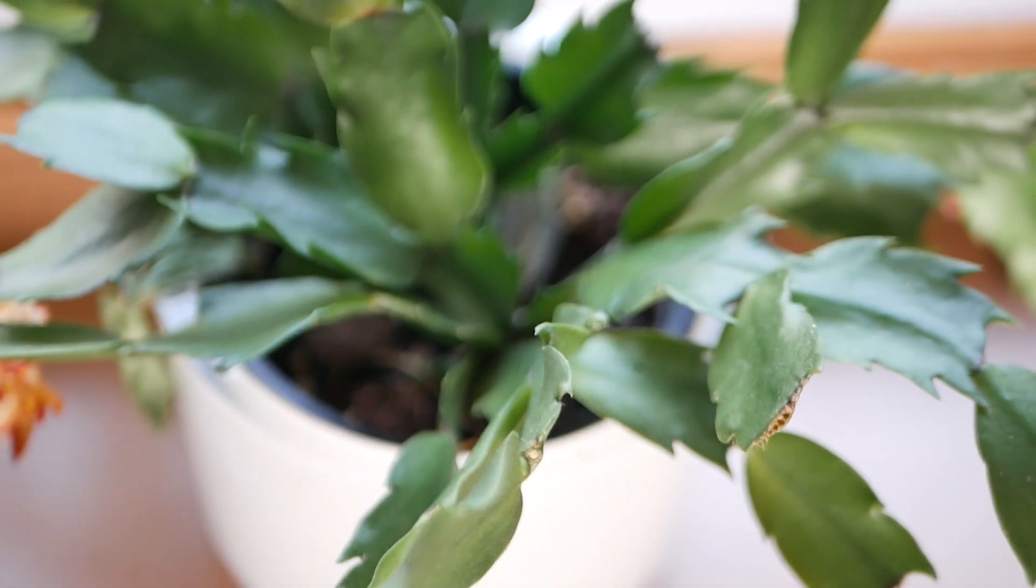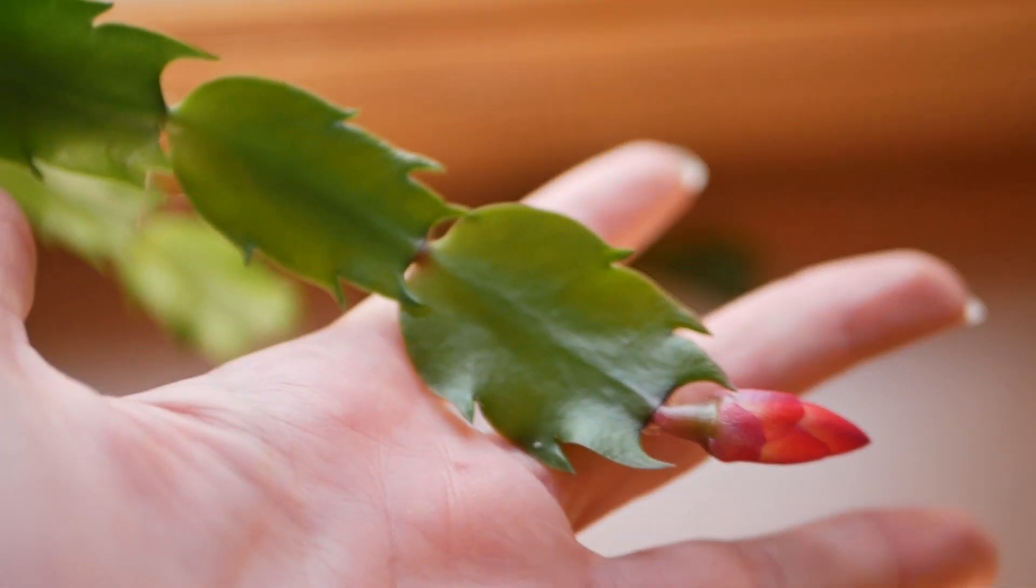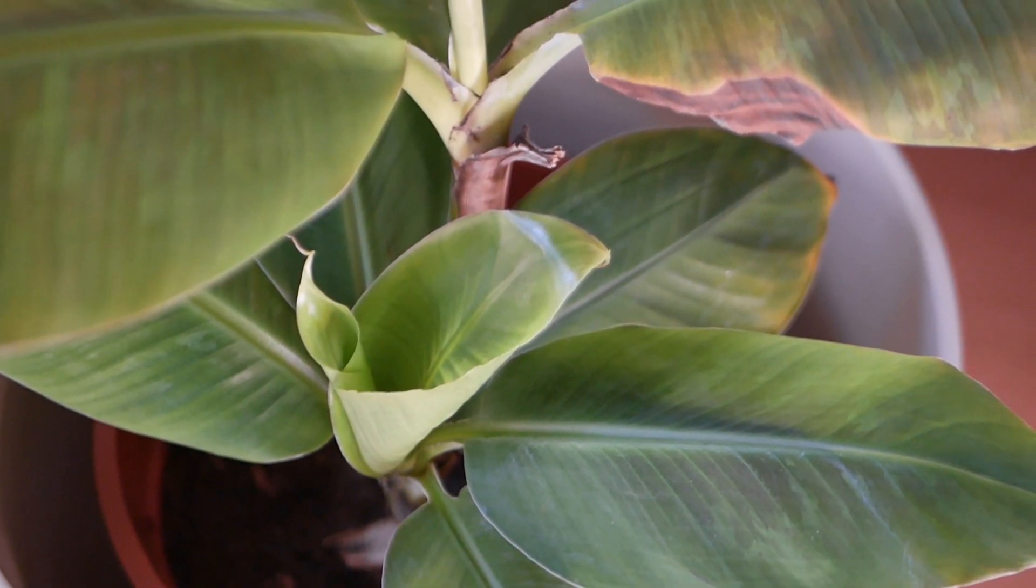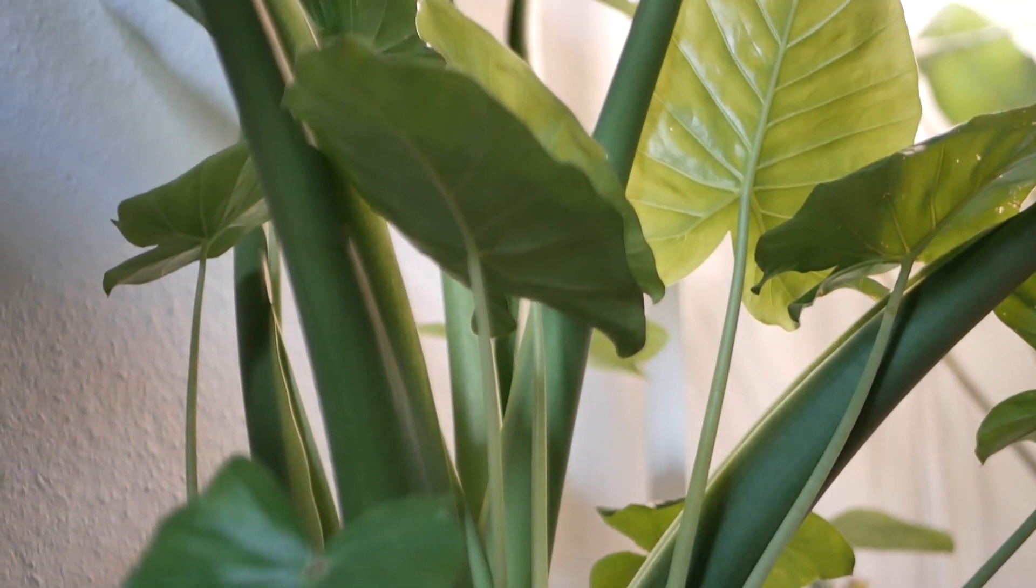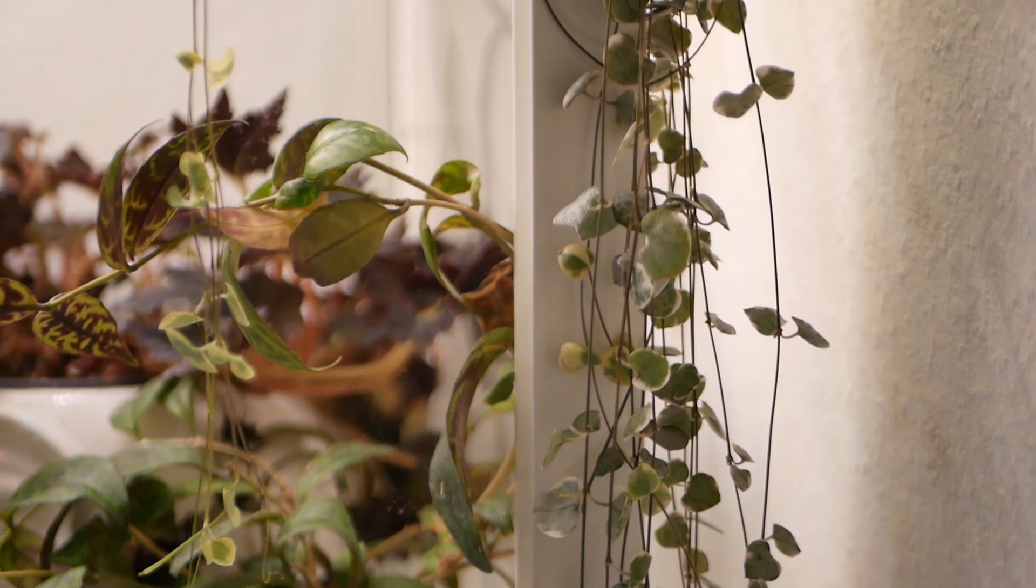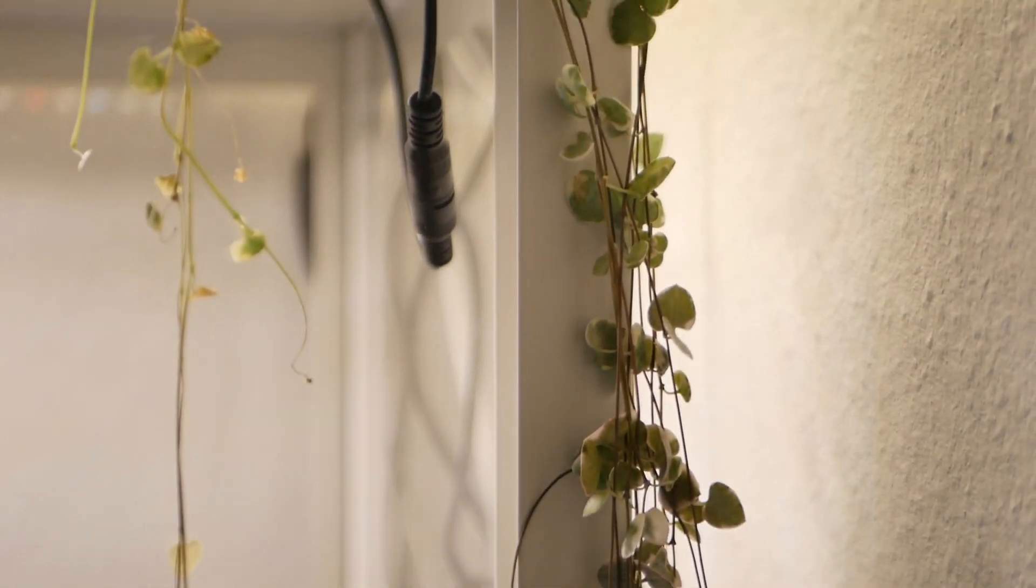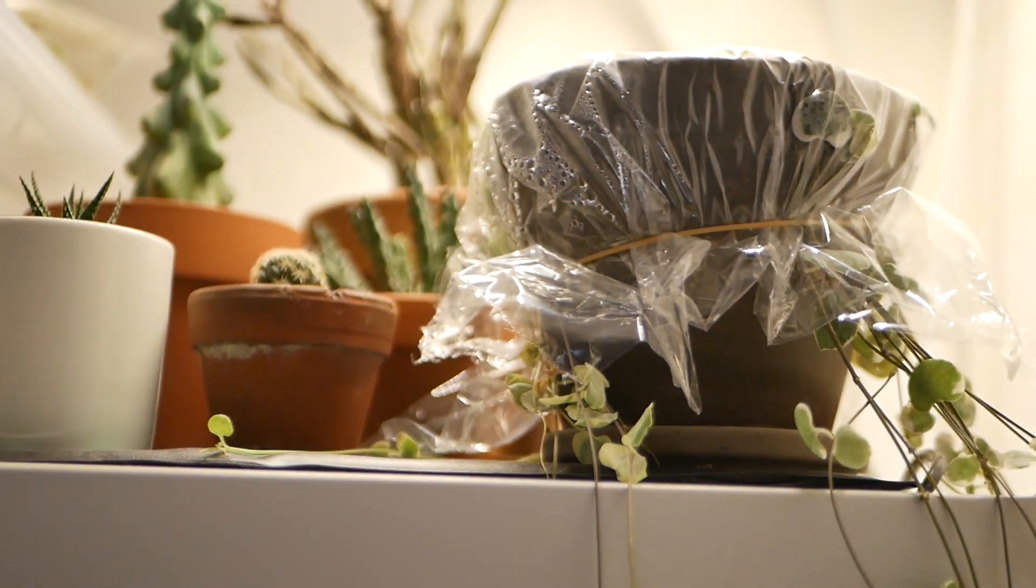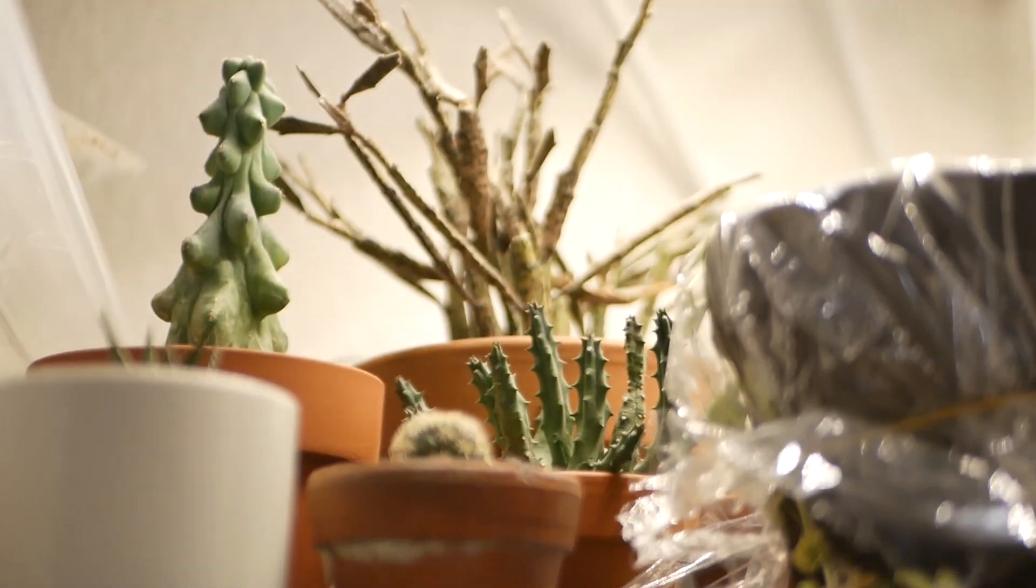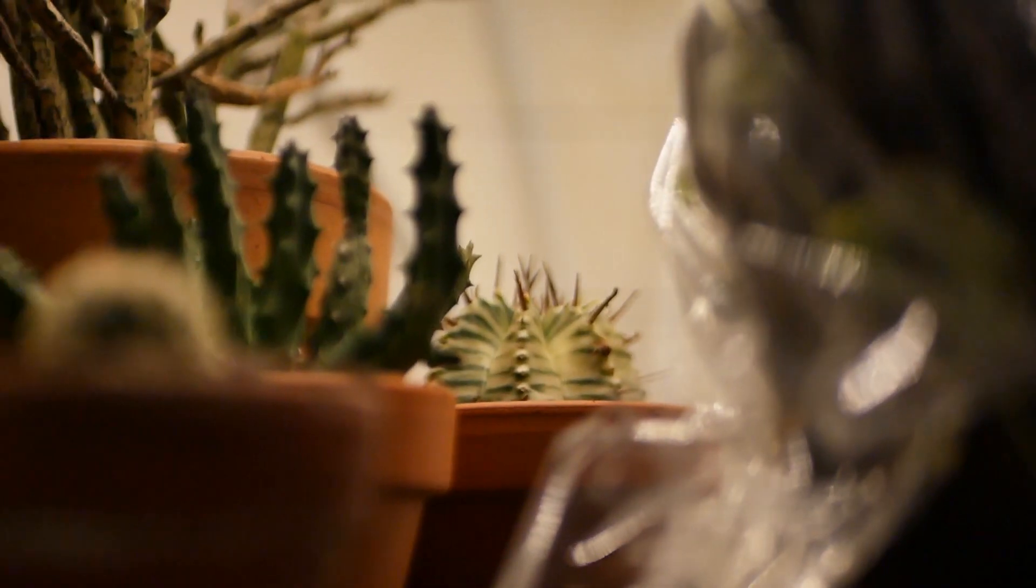On the windowsill you can see my thanksgiving cactus which is starting to bloom again. Right next to this one is my banana plant and then also my big alocasia. On top of the greenhouse cabinet there is my variegated string of hearts and actually a bunch of other succulents and cacti.